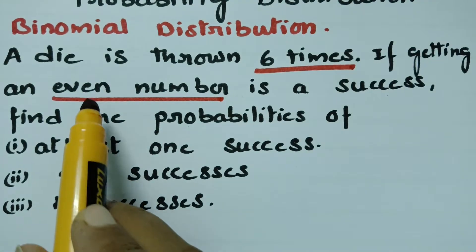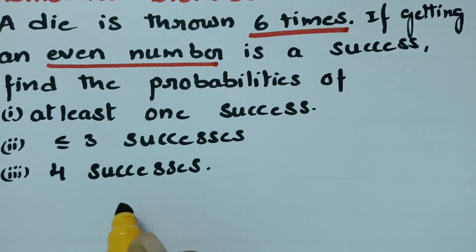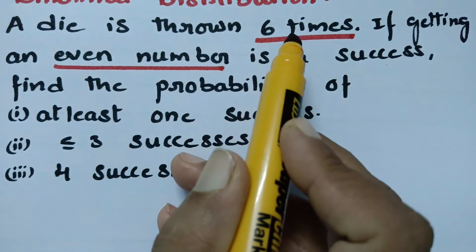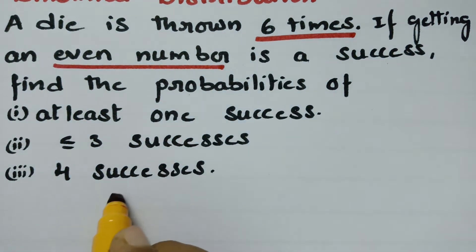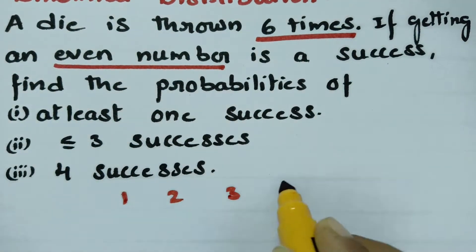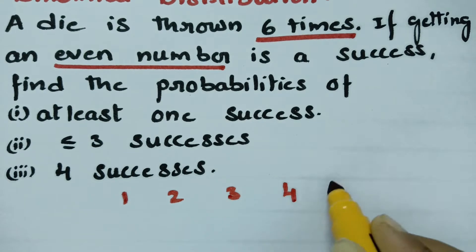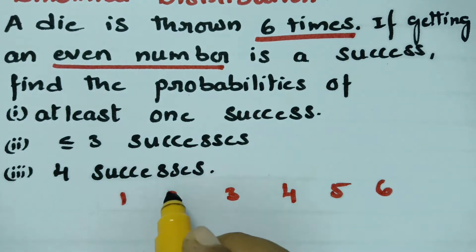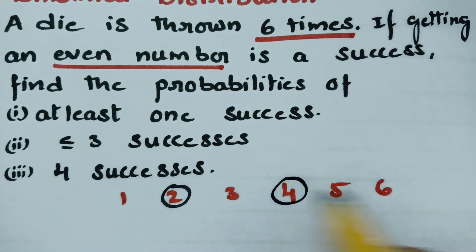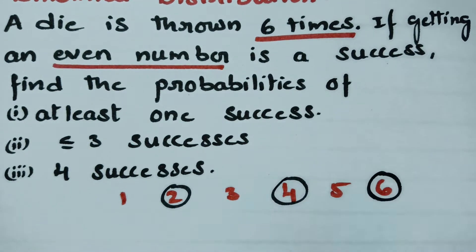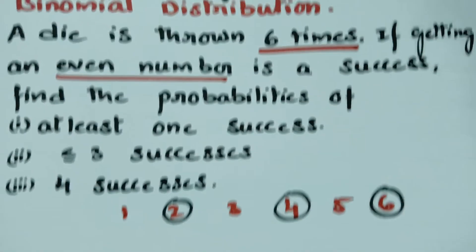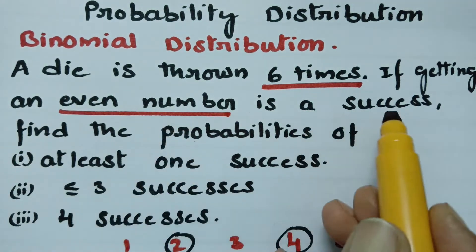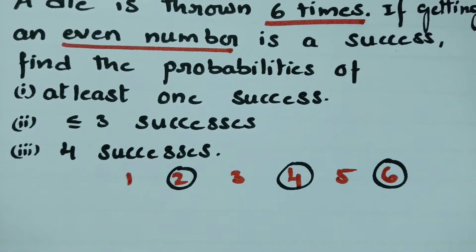We need even numbers. In a die, there are 6 numbers: 1, 2, 3, 4, 5, and 6. The even numbers among these are 2, 4, and 6. If getting an even number is a success, then P represents a success. So P is the probability of getting an even number.